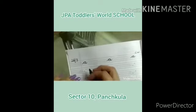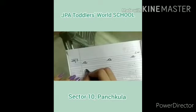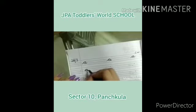Start from the dot. Join the dots. Make a cursive tail. Come down. Touch the blue line. Make a C. Go up. Come down. Touch the blue line. Make a curve. A.